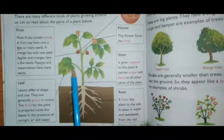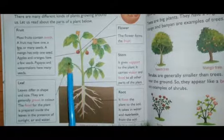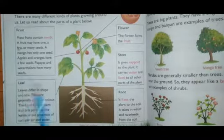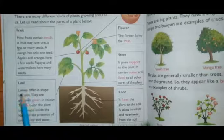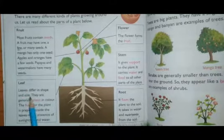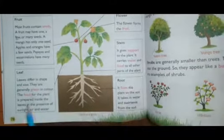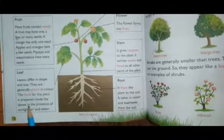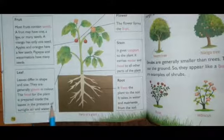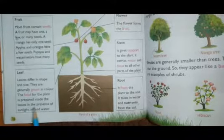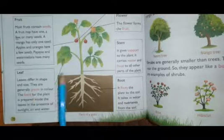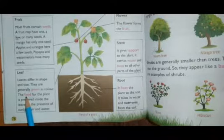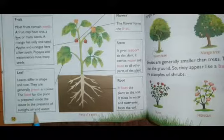What are the leaves? Leaves are different in shape and size. They are generally green in color. The food for the plant is prepared inside the leaves in the presence of sunlight, air and water.